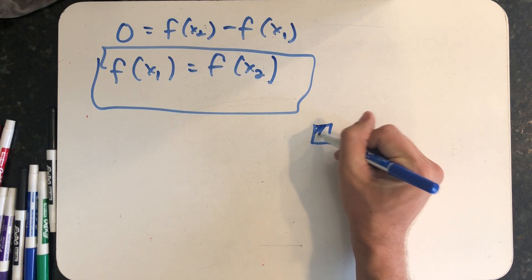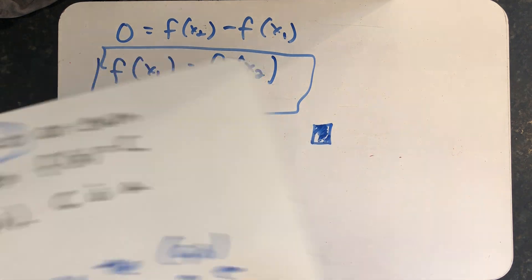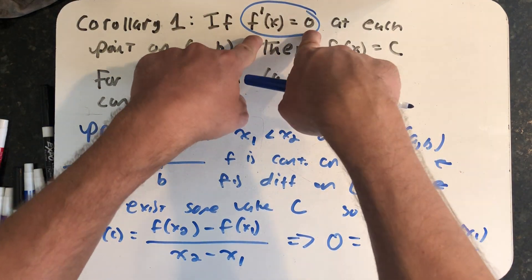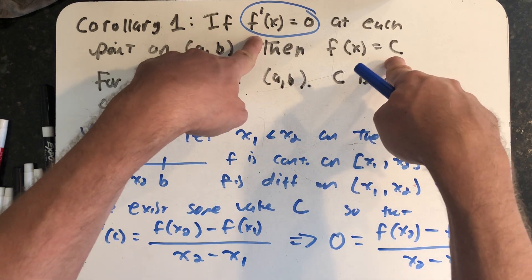And that's the end of the proof to the first corollary to the mean value theorem, that if I have a function whose derivative is always zero, then that function was a constant.